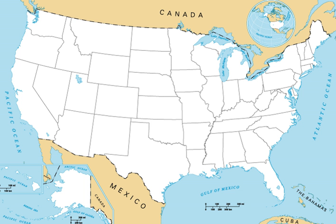Of this area, 2,959,064.44 square miles (7,663,941.7 square kilometers) is contiguous land, composing 83.65% of total U.S. land area, similar to the area of Australia. Officially, 160,820.25 square miles of the contiguous United States is water area, composing 62.66% of the nation's total water area.